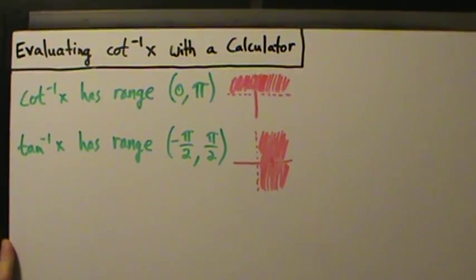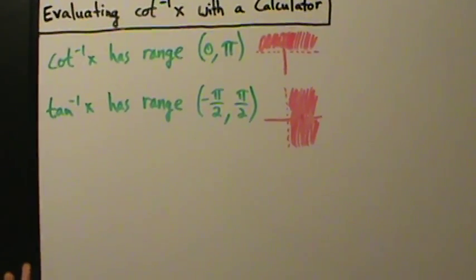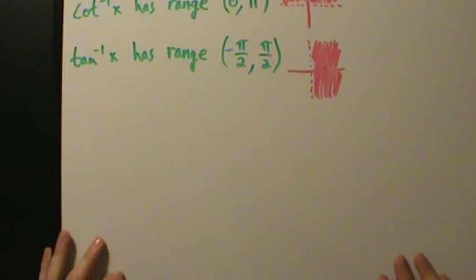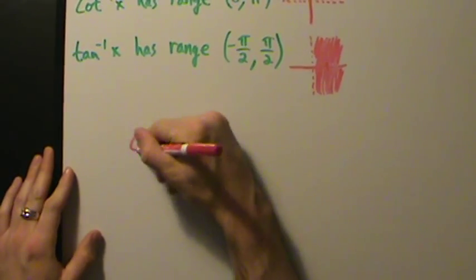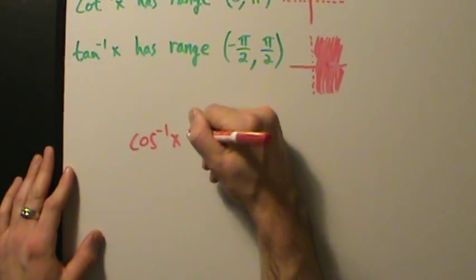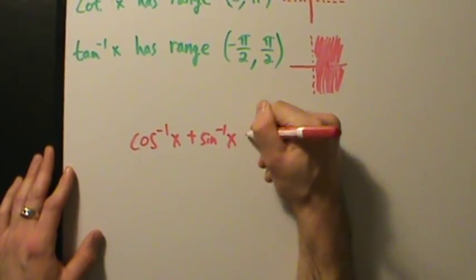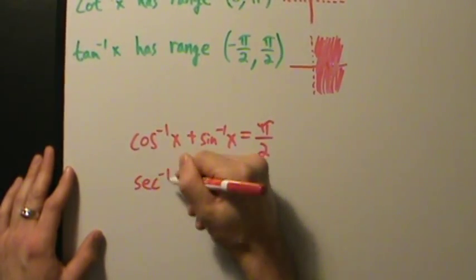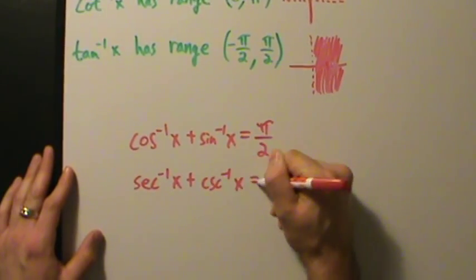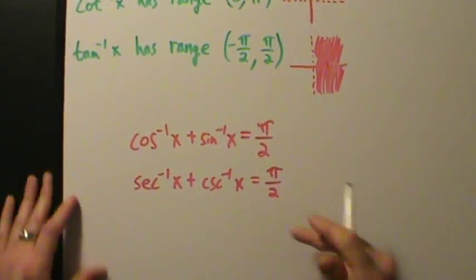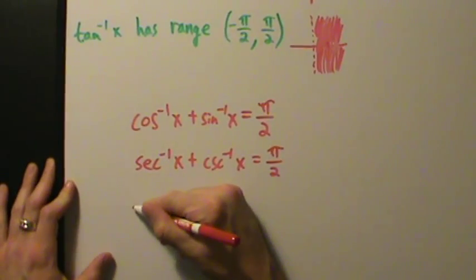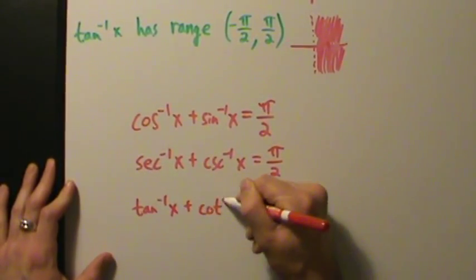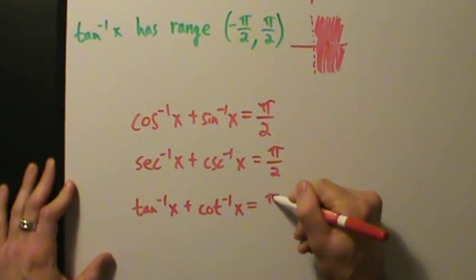What is actually nice is that a few videos ago we talked about some properties of inverse trig functions: inverse cosine of x plus inverse sine of x equals π/2; inverse secant of x plus inverse cosecant of x equals π/2; and here's the one that's going to be really useful — inverse tangent of x plus inverse cotangent of x equals π/2.